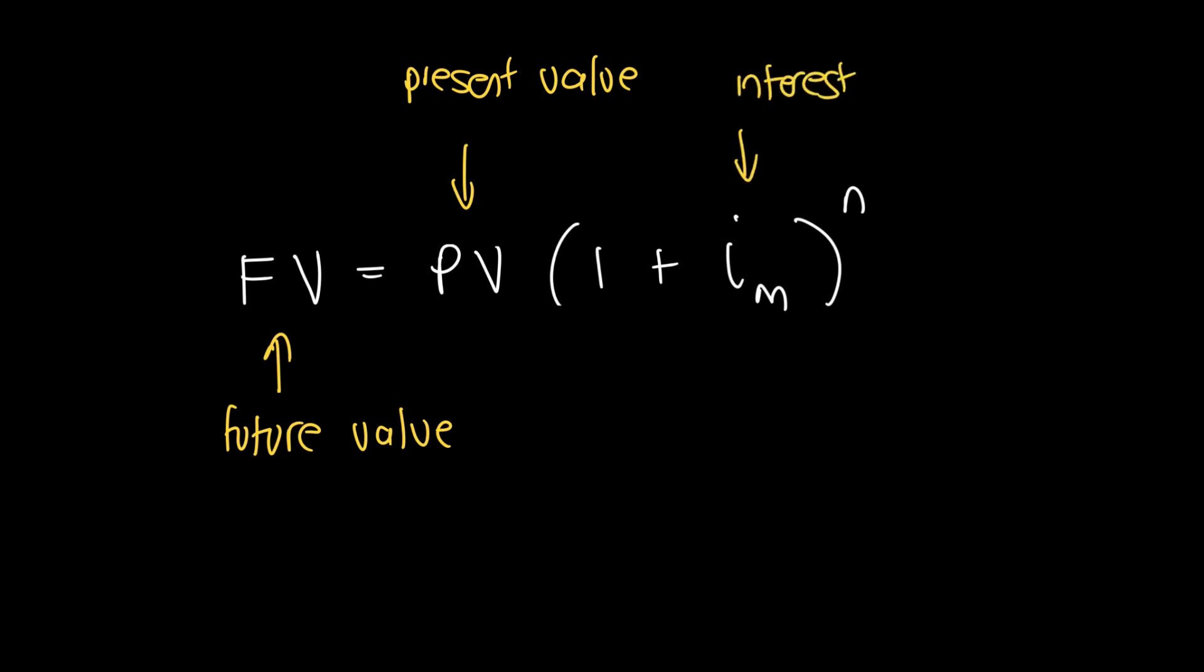First up, a reminder about the compound interest formula. The future value is equal to the present value times 1 plus i_m to the power of n, where this is your future value, this is your present value, this is your interest rate written in decimal fraction notation. In other words, it is going to be 0.01 or 0.1, etc.